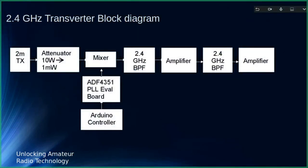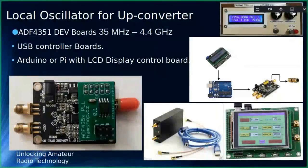Looking at the transverter block diagram: you have a 2 meter TX — 10 watts from a rig, or 1 milliwatt from a Raspberry Pi hat — combined with the ADF4351 local oscillator to produce a 2.4 GHz signal. You amplify it, add a bandpass filter to remove the unwanted mixer products (sum and difference), then amplify again and connect to the dish feed. These ADF4351 modules come as off-the-shelf boards, some USB-powered and some with Arduino, which you can configure manually to drive your mixer.